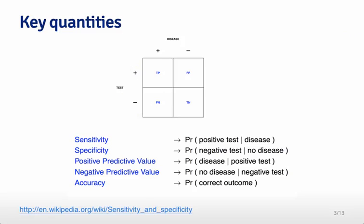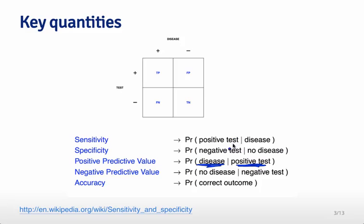Some key quantities are: sensitivity — the probability that we predict you are diseased given that you really are diseased. Specificity — if you're really healthy, what's the probability we get it right? The positive predictive value is the probability that you are diseased given that we called you diseased — it looks at all the people we called diseased and asks what fraction actually are. Similarly for the negative predictive value. Accuracy is just the probability we classified you to the correct outcome — it's the terms on the diagonal, true positives plus true negatives.